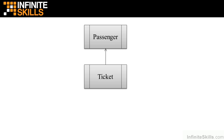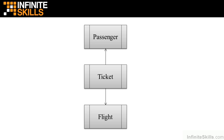Now if you've ever made an airline reservation, you also know that the ticket has a flight. So we'll create a class for the flight. The flight will contain information such as the destination city, the time of your departure, etc. So every ticket will have a passenger and a flight.